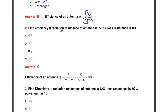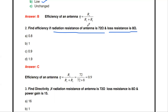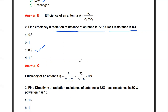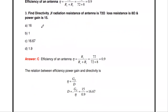The next question: find the efficiency if the radiation resistance of the antenna is 72 ohms and the loss resistance is 8 ohms. Using the formula η = Rr / (Rr + Rl) = 72 / (72 + 8) = 72 / 80 = 0.9. So the answer is 0.9.